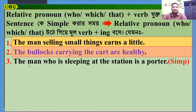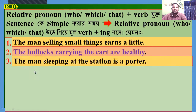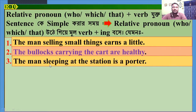Number 3: 'The man who is sleeping at the station is a porter.' Make it simple. Dear students, here 'who' is the relative pronoun and 'sleeping' is the principal part. So, the answer will be: 'The man sleeping at the station is a porter.'